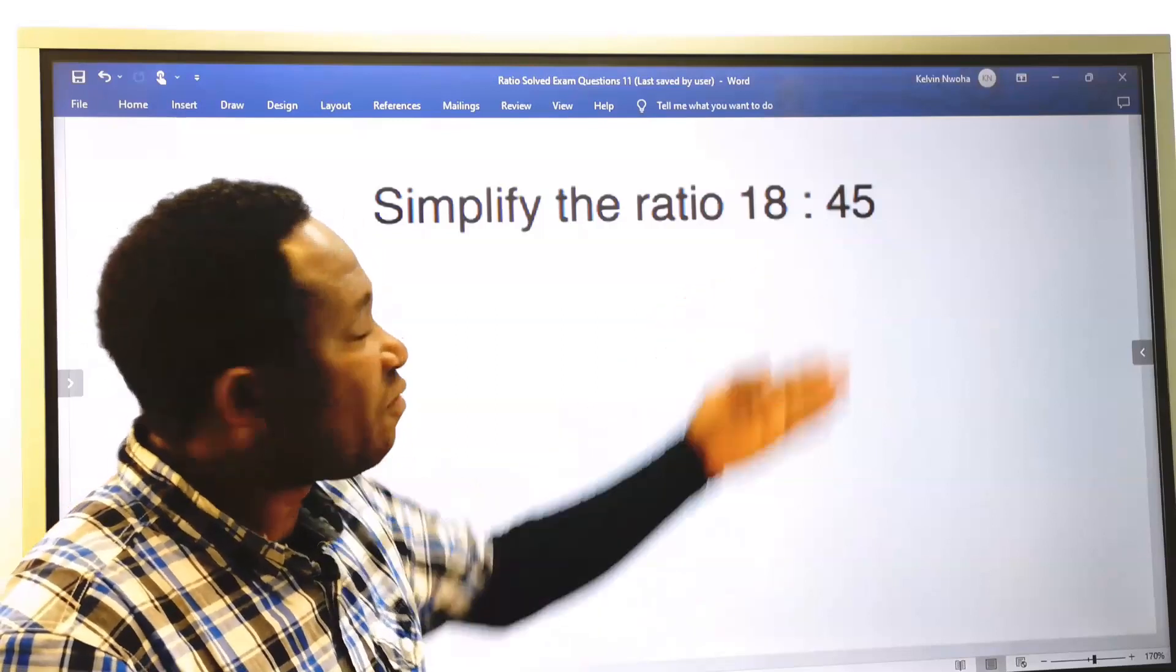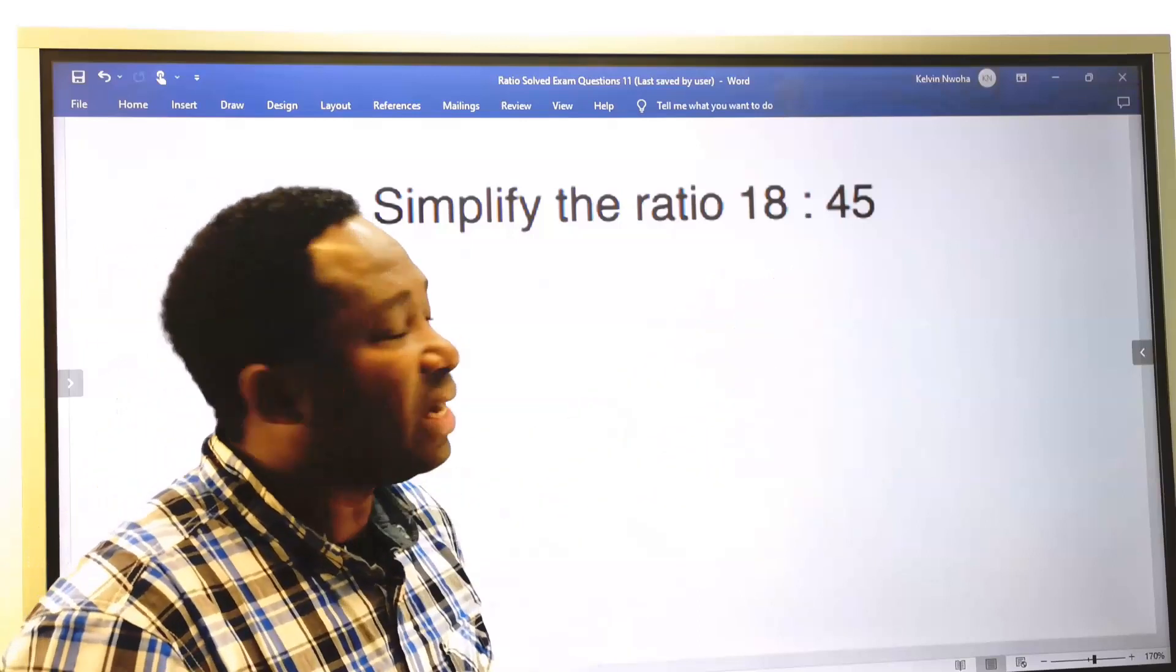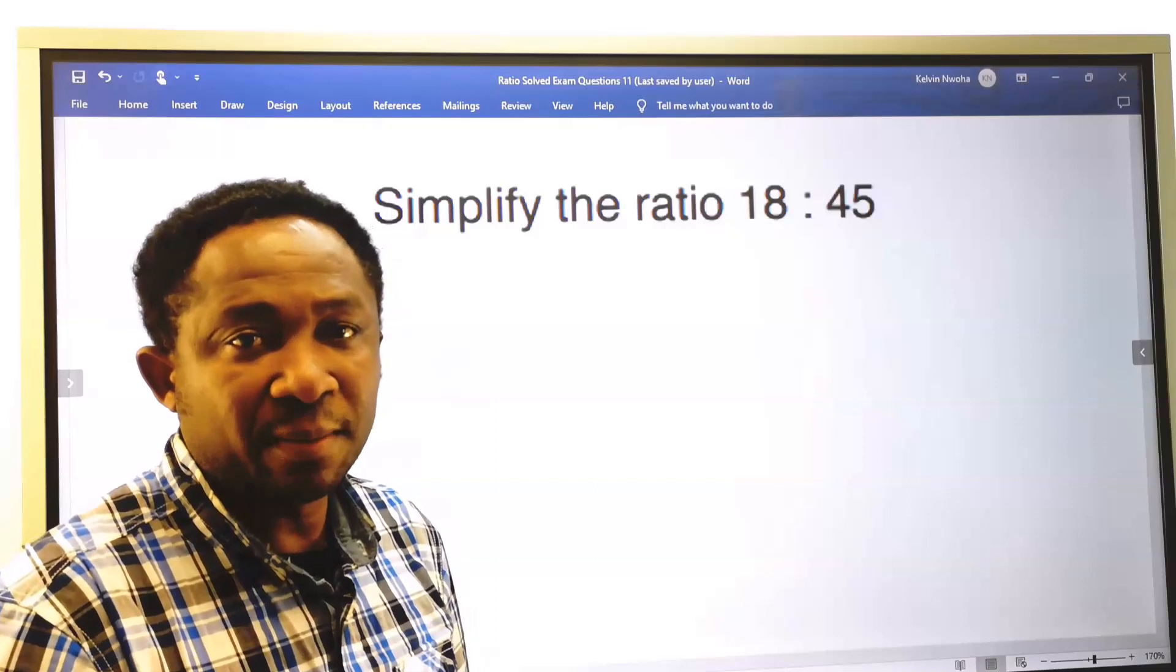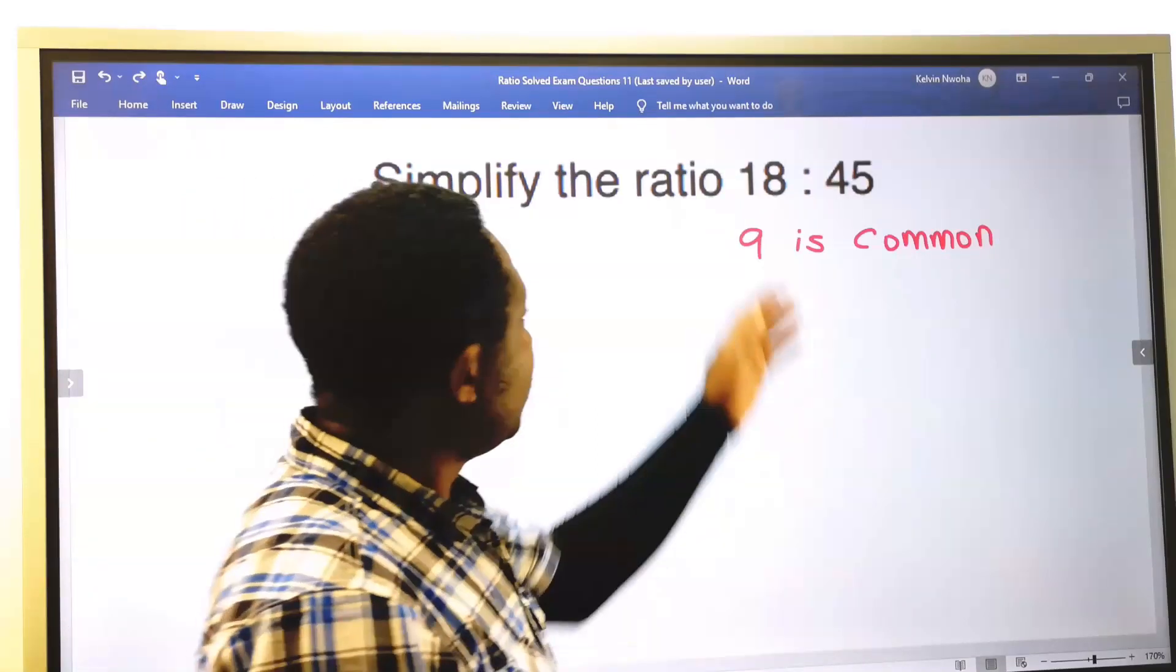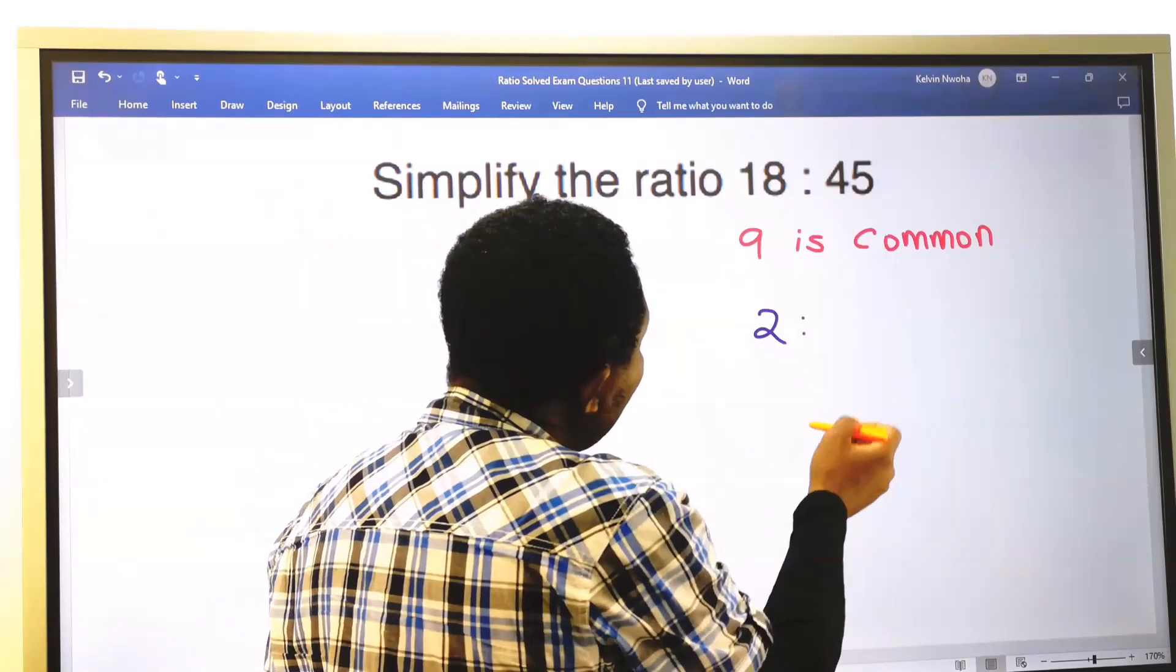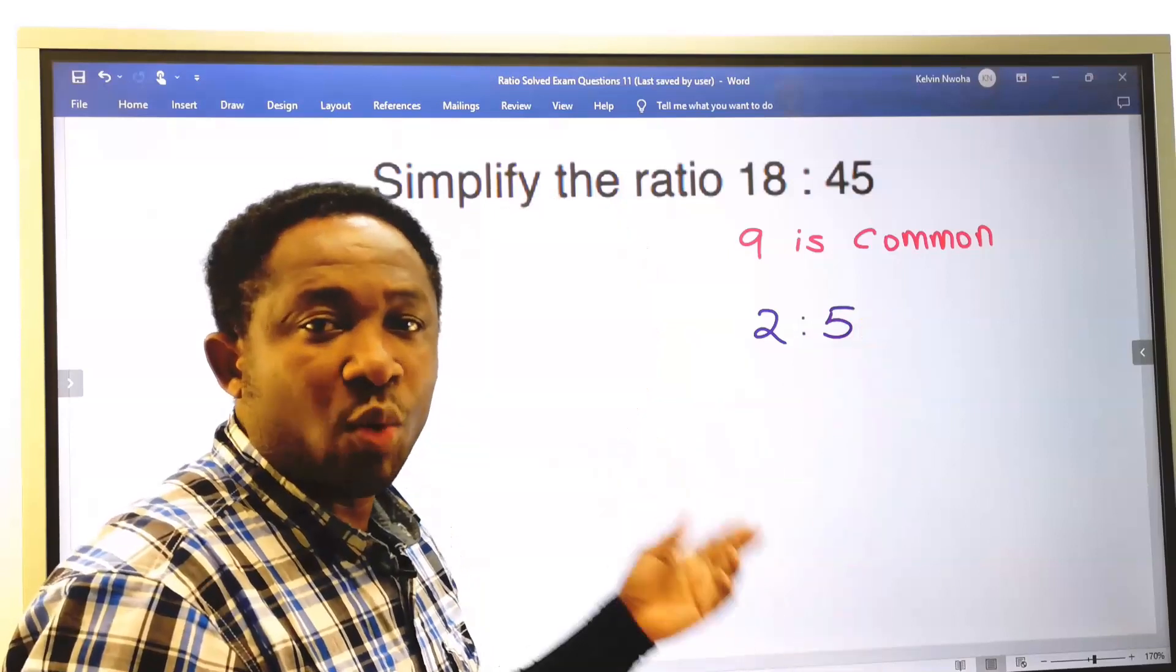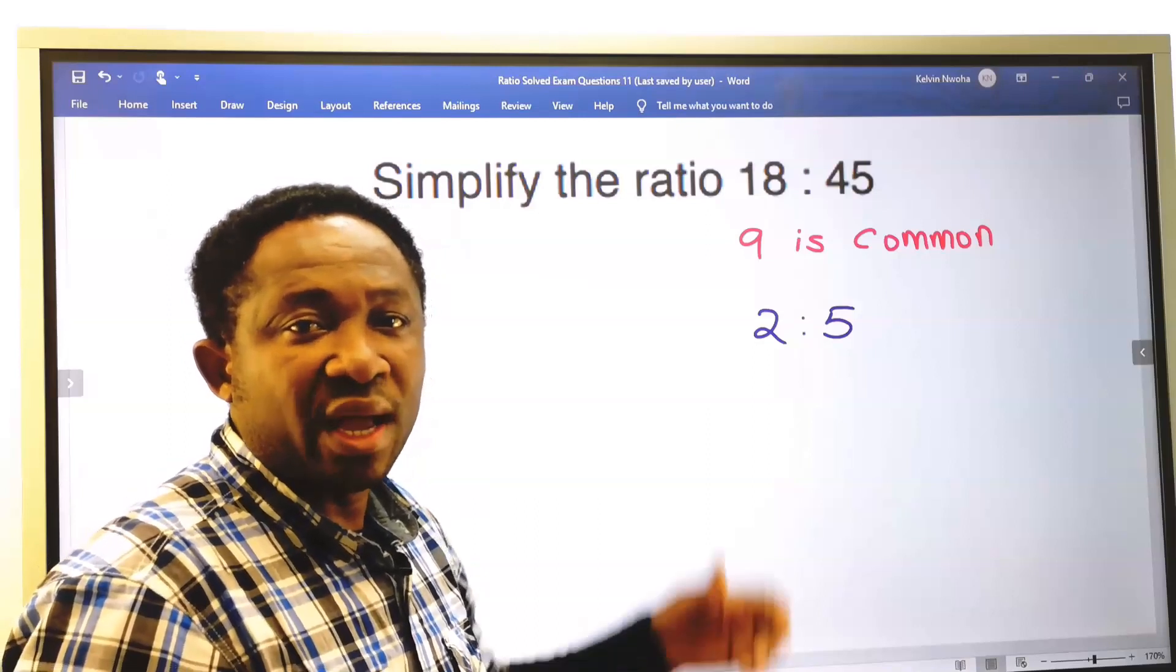Consider the common factor that can divide 18 and divide 45 and we're going to have a whole number. 9 is common. 9 into 18 is 2, ratio 9 into 45 is 5. This is a one-step solution. Just look for a common factor and divide.